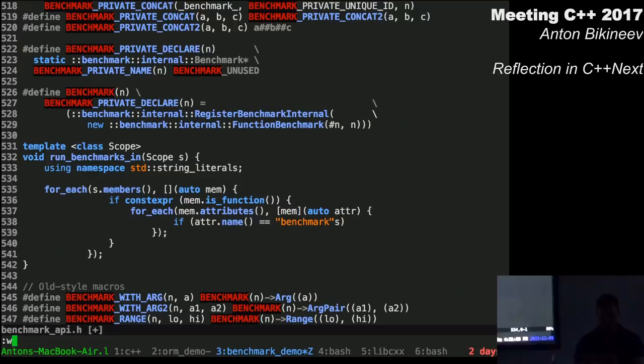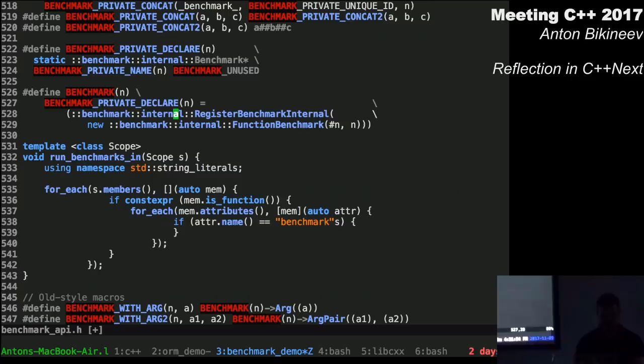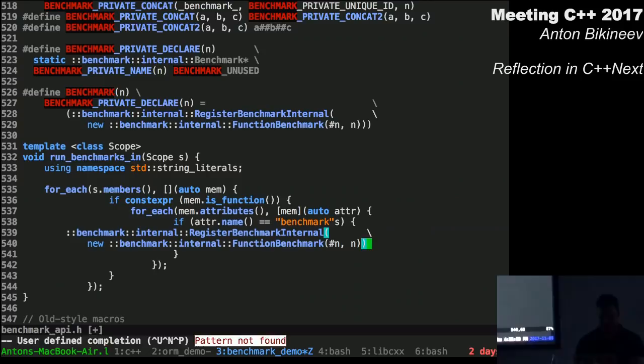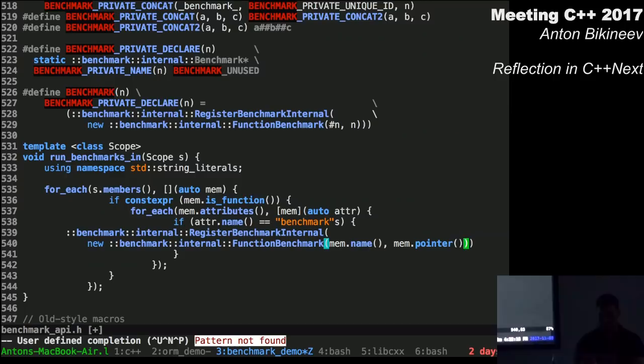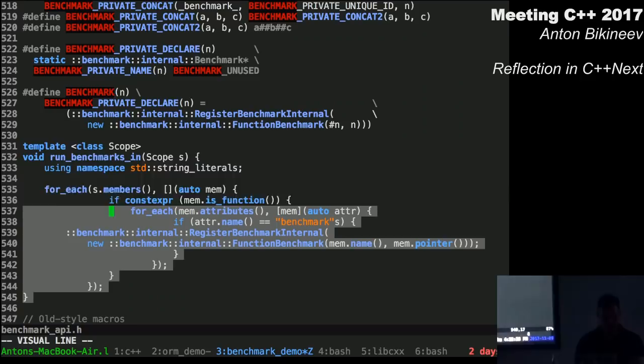And here I want to check whether it is a function. And if it is a function, then I want to iterate over all attributes. And check whether it is really a benchmark attribute. I want to use C++11 user-defined literals. In order to do this, I need to introduce namespace literals. And if it's essentially a benchmark attribute, then I want to insert this code, this registration code, here.